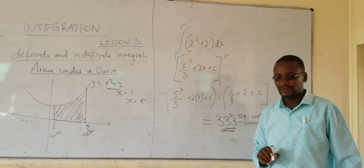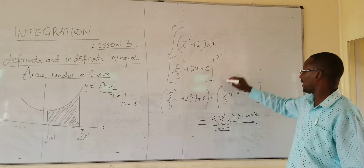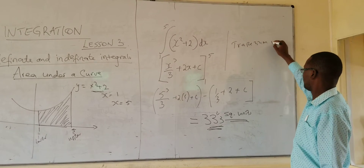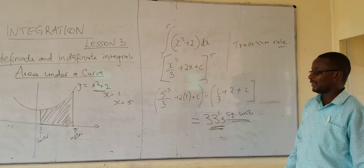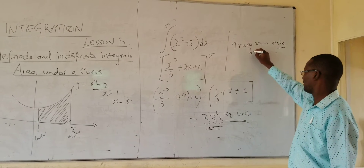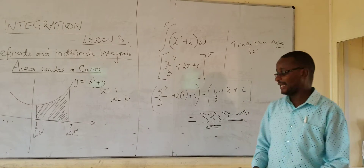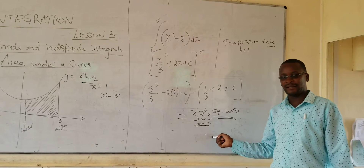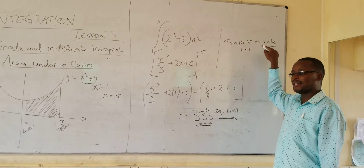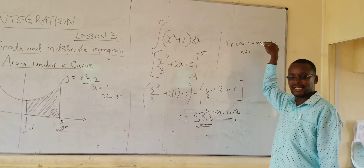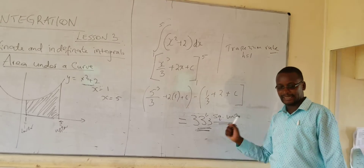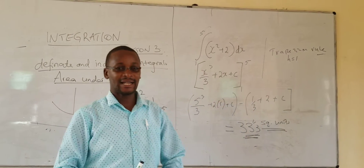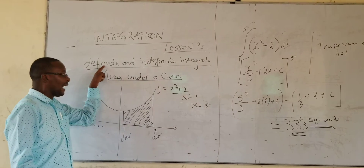I would like you, in your own time, to get the same area using the trapezium rule. Go and use the trapezium rule — you can use H equals 1 — and you will see the kind of answer you get. It is going to be slightly different from this one. The trapezium rule gives an approximation; it is not exact. But this integration answer is exact. So, that is how we use integration to get the area under a curve, and that is the kind of integration we call definite integration.